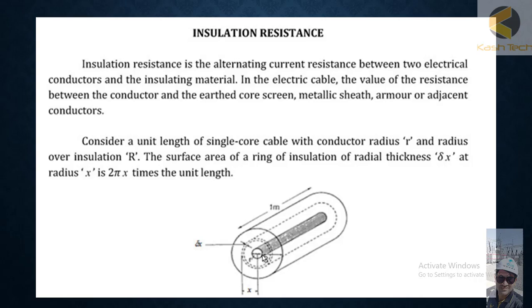The surface area of a ring of insulation of radial thickness equal to delta x at radius x is 2π x times the unit length. So you can see this is the radius.